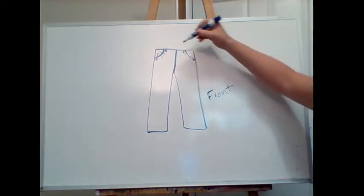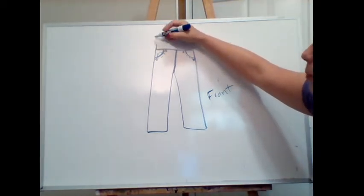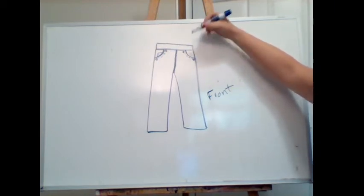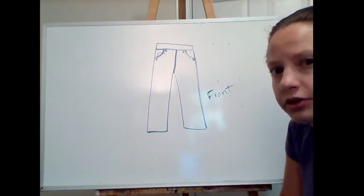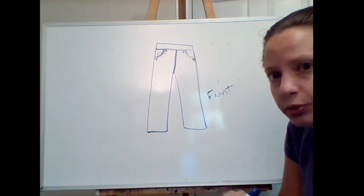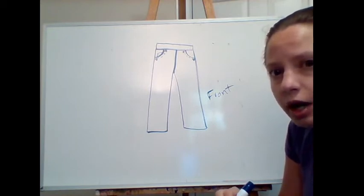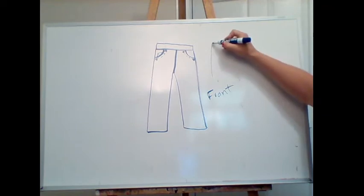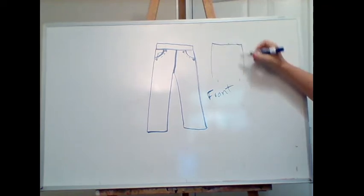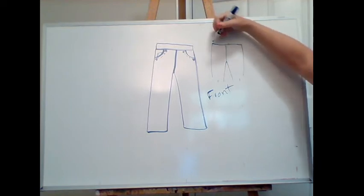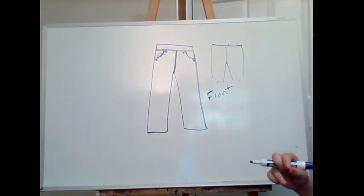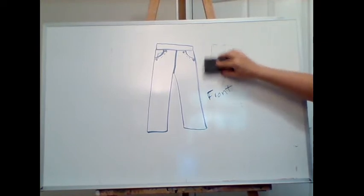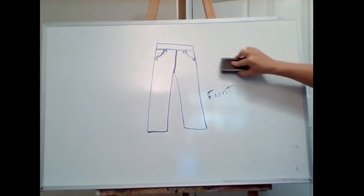We're missing the waistband. All pants are typically going to be finished with a waistband. However, if you're making dress pants and want a clean finish on top, the same rule applies as skirts — you can finish it with a facing on top as well. We're also missing the indication of a fly; on most pants and jeans, our closure is the fly.